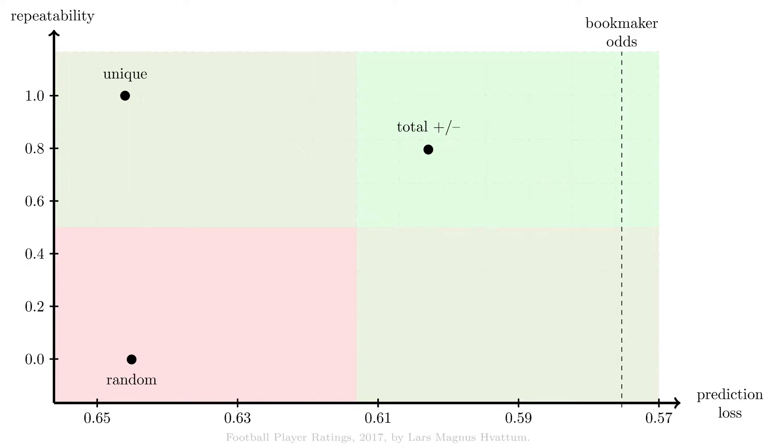The second rating we considered was what we called pure plus minus, which is basically the total plus minus score divided by the playing time. Interestingly, it gives more or less the same prediction loss, but a much weaker value for the repeatability measure.